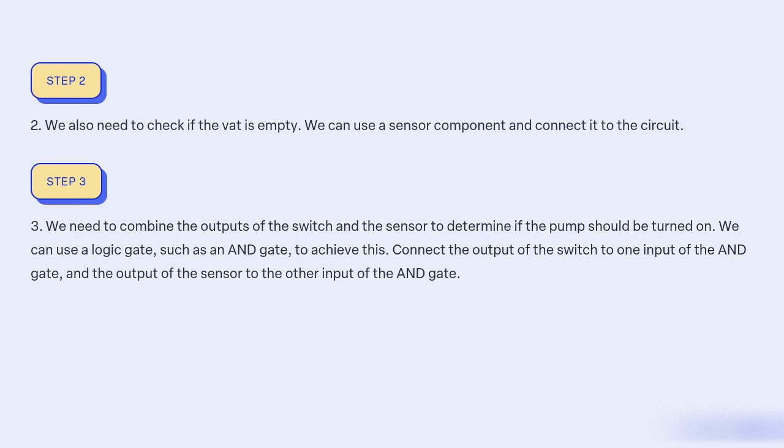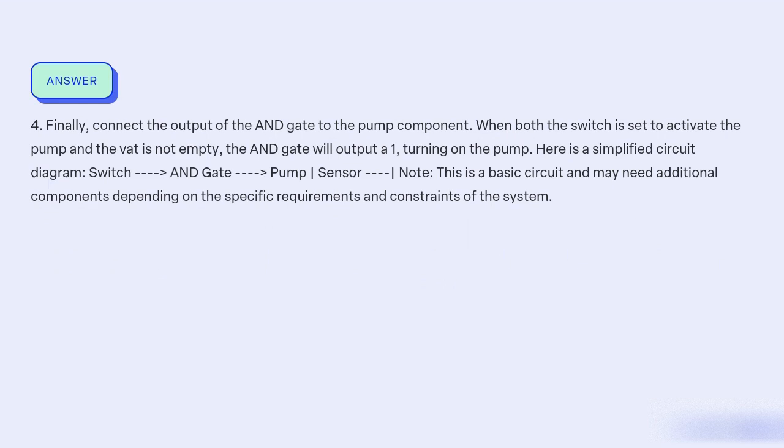Connect the output of the switch to one input of the AND gate and the output of the sensor to the other input of the AND gate. Finally, connect the output of the AND gate to the pump component.